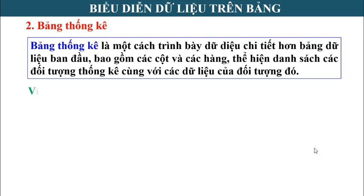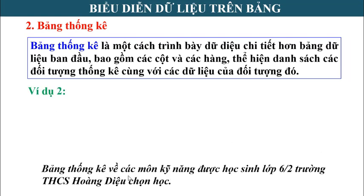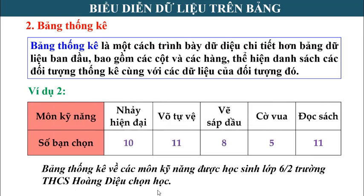Ví dụ 2: bảng thống kê về các môn kỹ năng được học sinh lớp 6B chọn học. Tại trường THCS Hoàng Diệu, ngoài các môn văn hóa, bạn còn được chọn học các môn kỹ năng như nhảy hiện đại, võ tự vệ, vẽ sáp dầu, cờ vua và đọc sách. Nhìn vào bảng, ta thấy số học sinh chọn học từng môn: nhảy hiện đại là 10, võ tự vệ là 11. Tổng số học sinh lớp 6B là 10 + 11 + 8 + 5 + 11 = 45 học sinh.